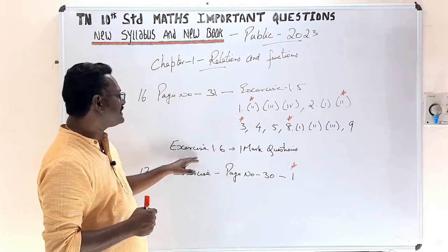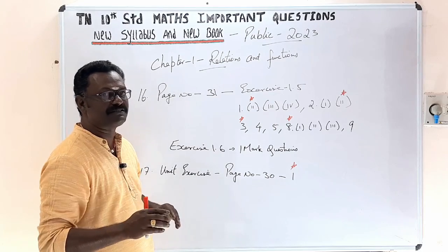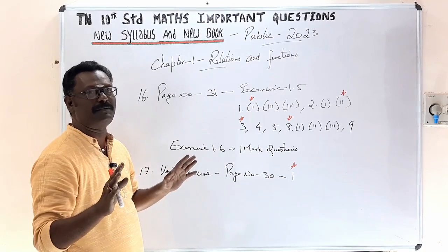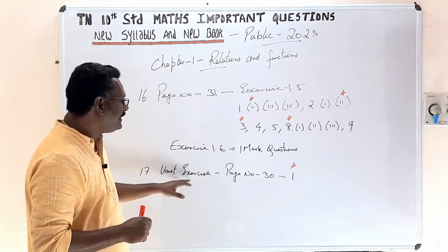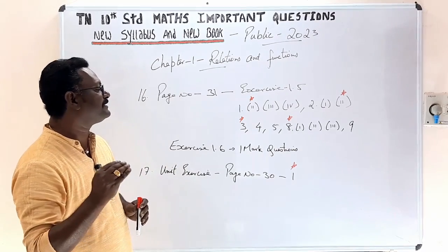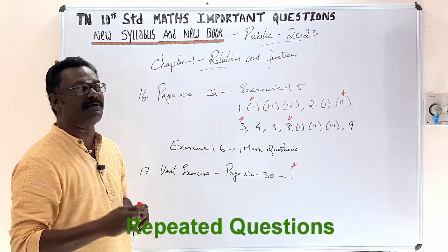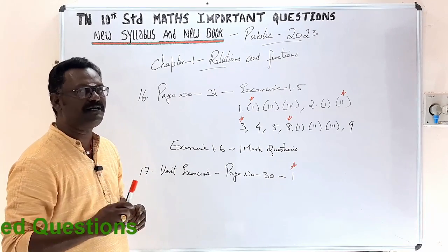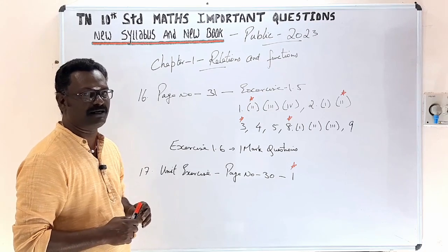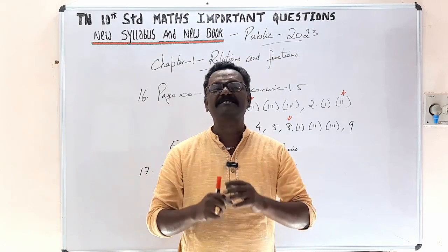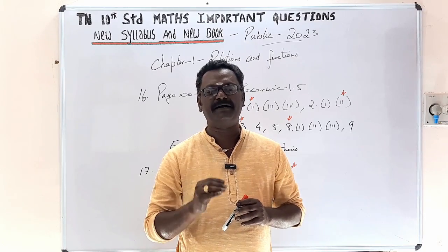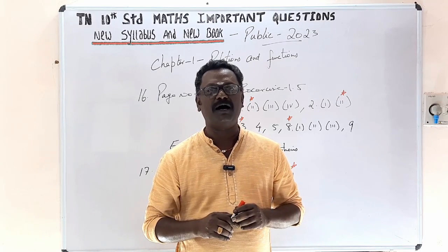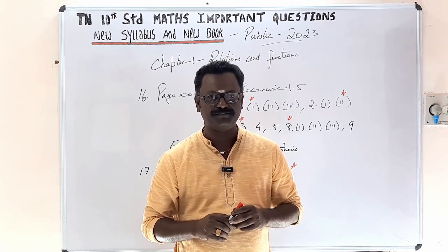Exercise 1.6: one more question to cover. Unit exercise, page number 33, 1st sum — this is a question that repeats every time on the exam. The purpose of this channel is to make students excel in mathematics and to score 100 out of 100. Thank you.